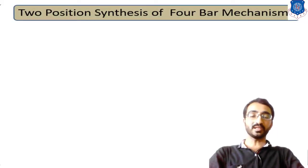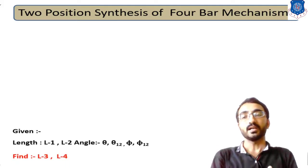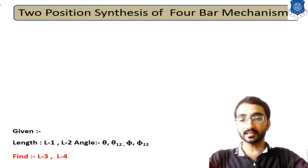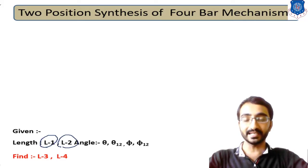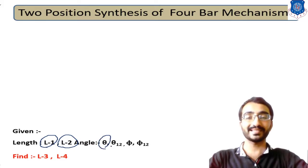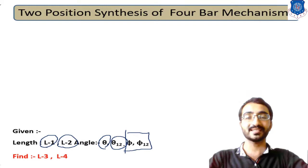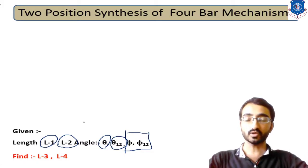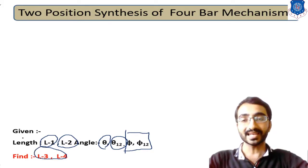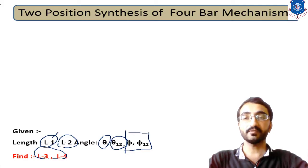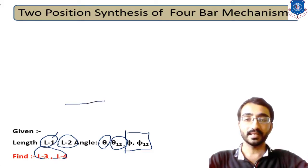In this design procedure, the initial data given includes: length of link 1 (L1), length of link 2 (L2), input link angle theta (initial position of crank), and theta-12. For the output link, phi and phi-12 are given. These represent the positions of the input and output links. We have to find out the lengths of the remaining two links.